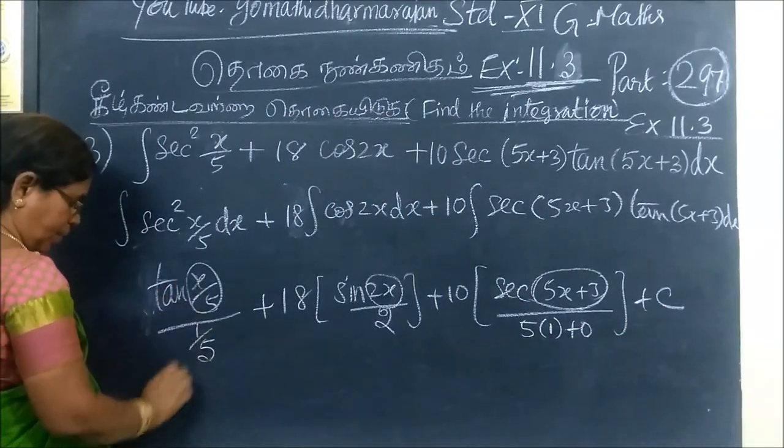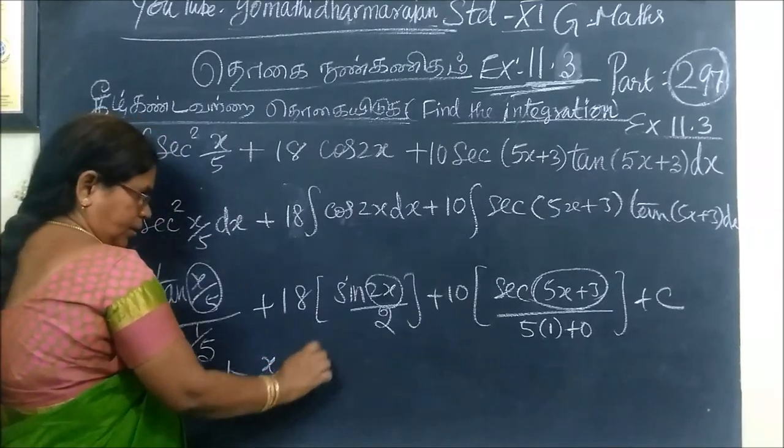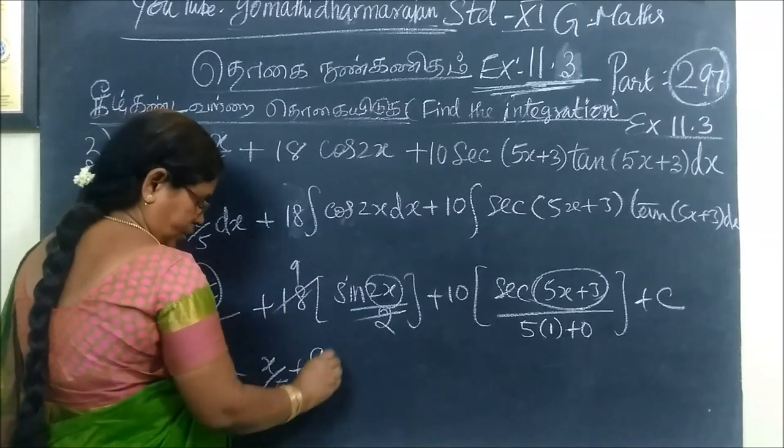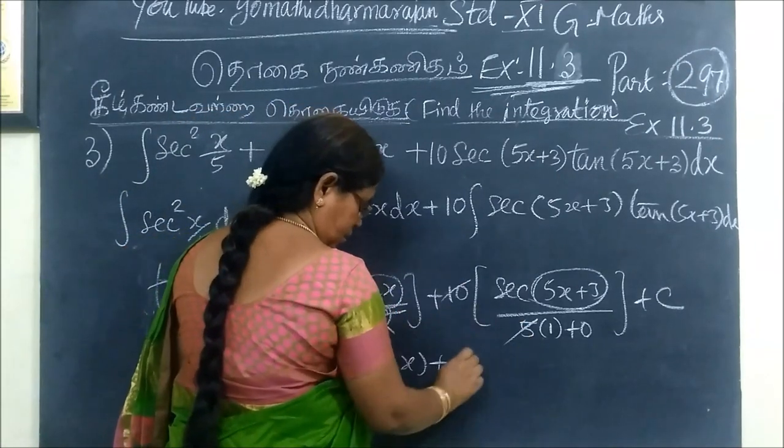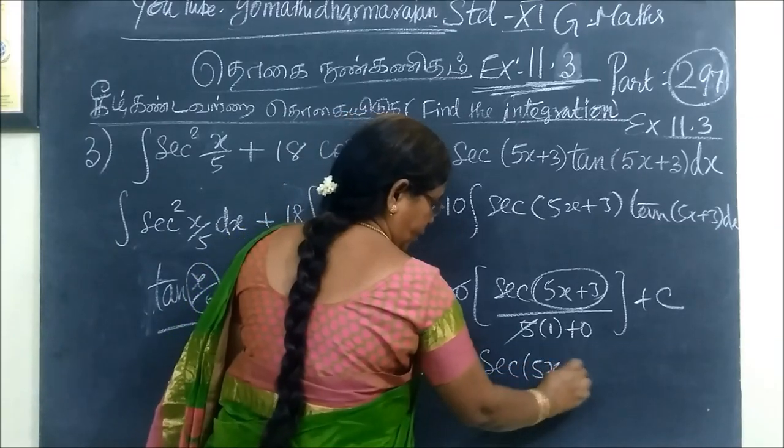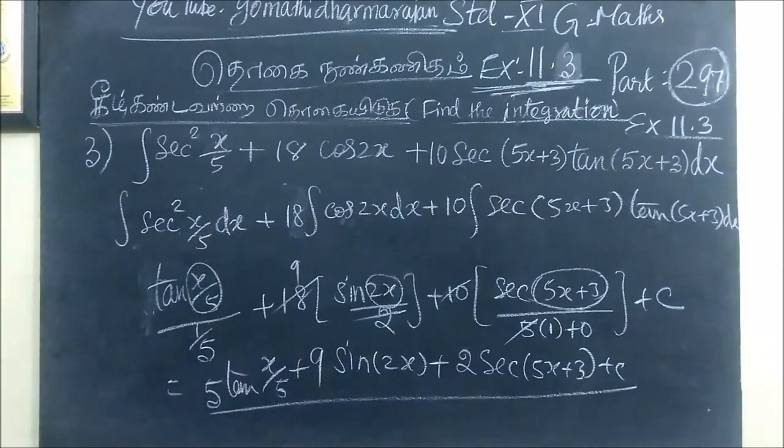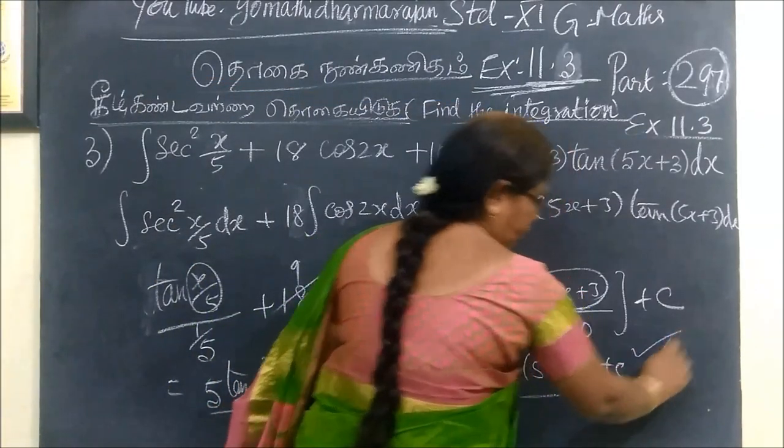The 5 I am going to take back. So 5 tan x by 5 plus 9 sin 2x then plus 2 secant 5x plus 3 plus c. So this is the answer. 2 secant 5x plus 3, then 9 sin 2x, then 5 tan x by 5.